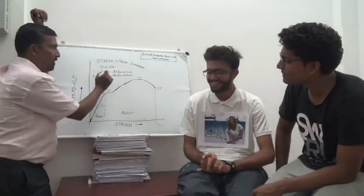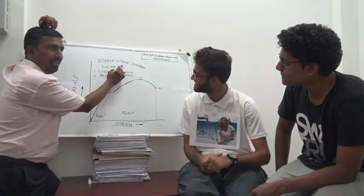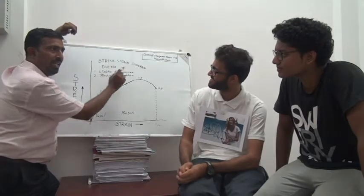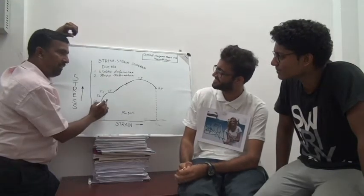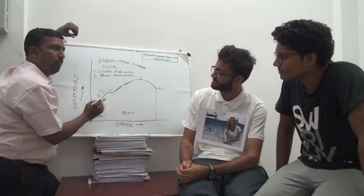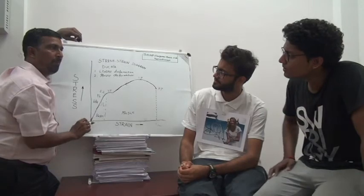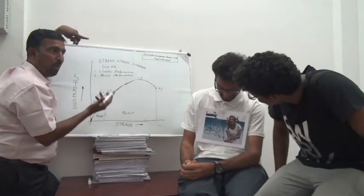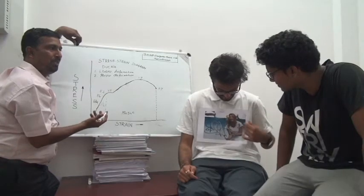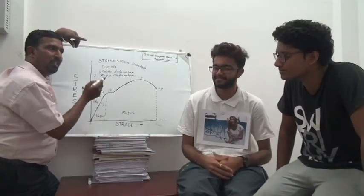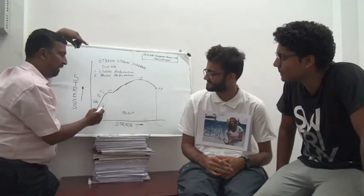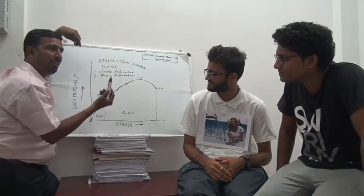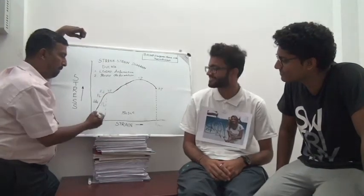This is the Stress-Strain Graph. In a stress-strain graph, we find Young's Modulus. If you refer to the Steffi Graph, there may be some Old's Modulus — Steffi Graph is old now! So in stress-strain graph we find Young's Modulus; maybe in Steffi Graph we can find Old's Modulus.